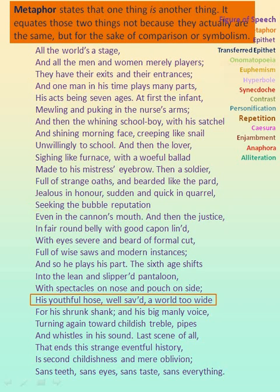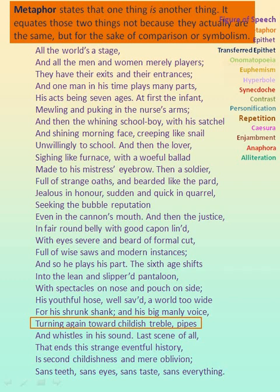'His youthful hose' — hose means pants, and the size of the pant has become so big that it is like a world too wide. Hence, metaphor is used. 'For his shrunk shank' — shank refers to a piece of meat cut from a leg of an animal, but here the man's leg is compared, which is narrower with age. Hence, the figure of speech is metaphor. 'Turning again toward childish treble pipes' — here the voice is compared to musical notes. Hence, the figure of speech is metaphor.